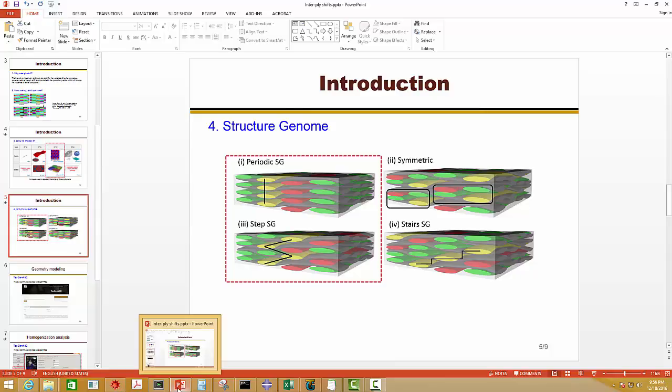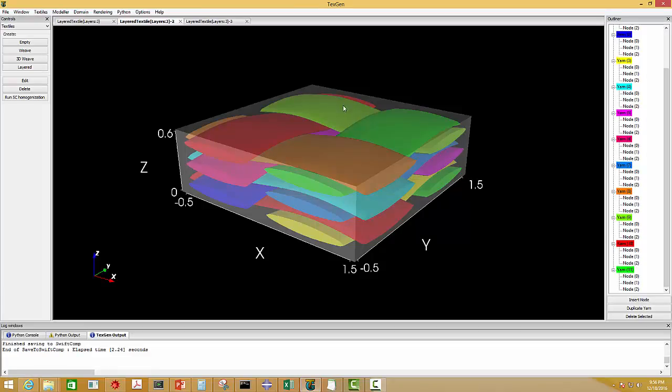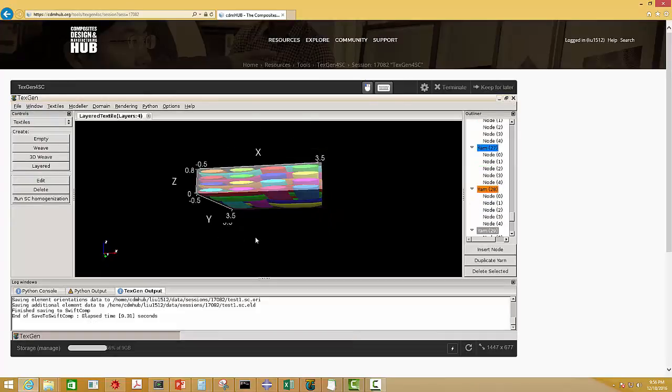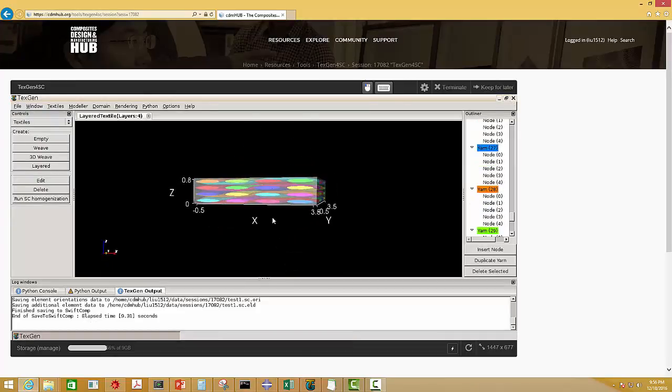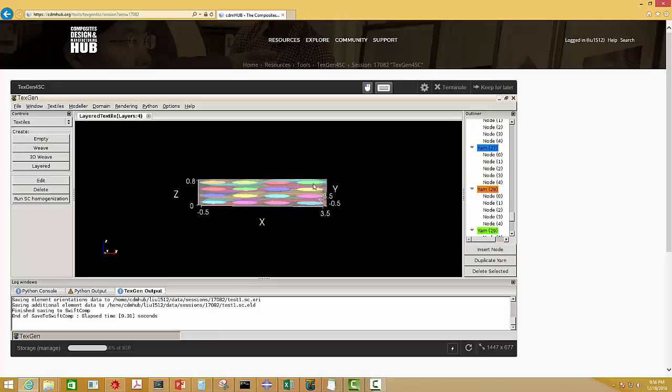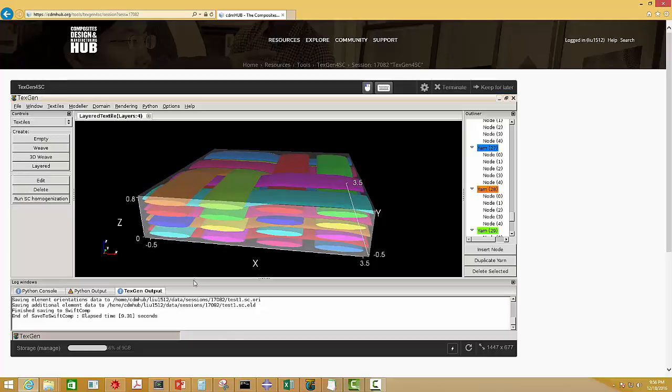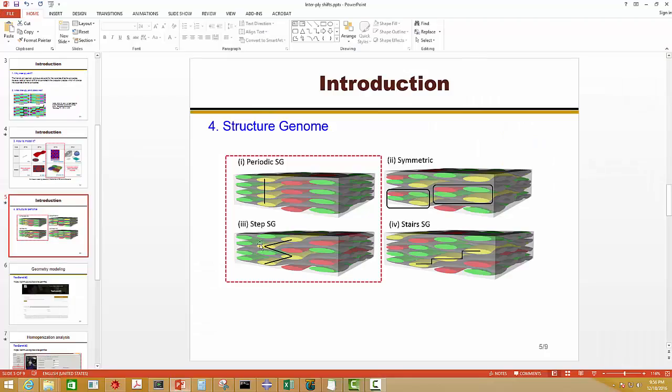OK, so let's do this step SG. And actually, this is very simple. Actually, this is the basic SG. We don't have the layer shift. You see that this is the periodic change. And here, we want to make it become a step SG.